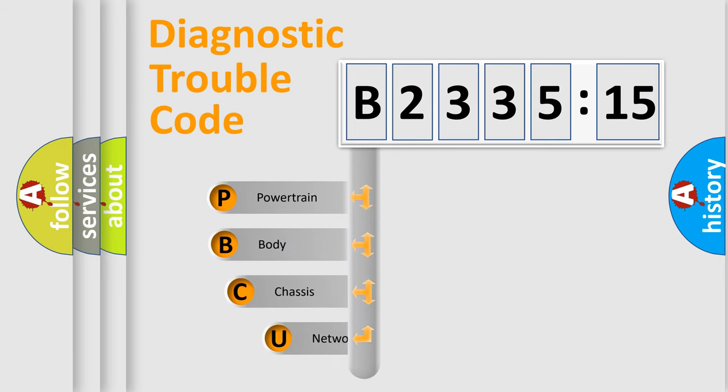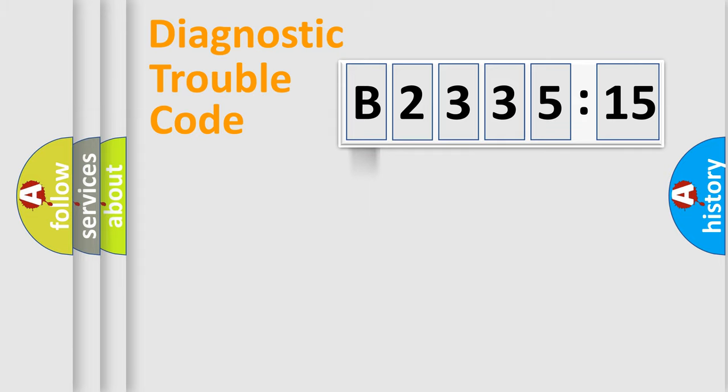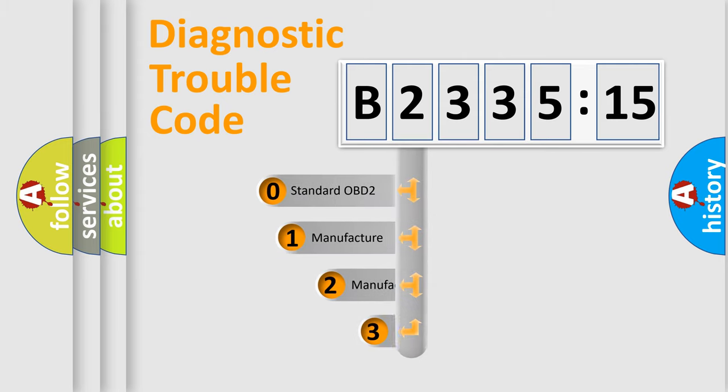First, let's look at the history of diagnostic fault code composition according to the OBD2 protocol, which is unified for all automakers since 2000. We divide the electric system of an automobile into four basic units: Powertrain, Body, Chassis, and Network.